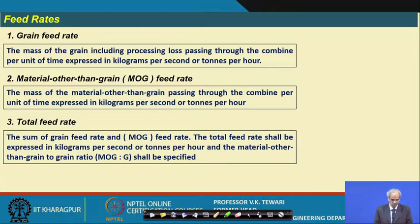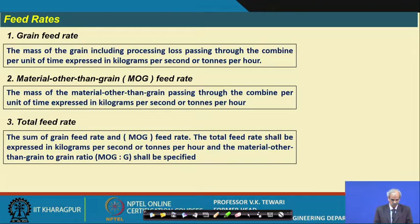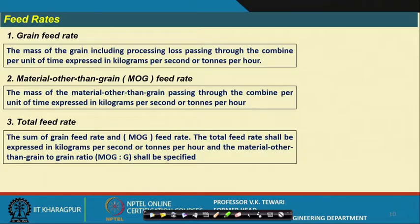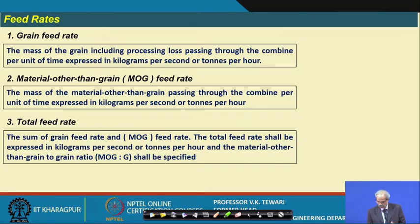Feed rates to be measured include: grain feed rate, material other than grain (MOG) feed rate, and total feed rate — which is the sum of the grain feed rate and the MOG feed rate. All these must be recorded and reported to the testing authority.